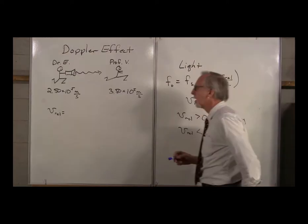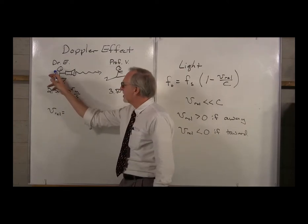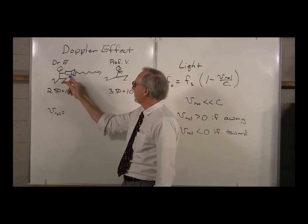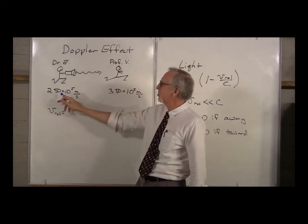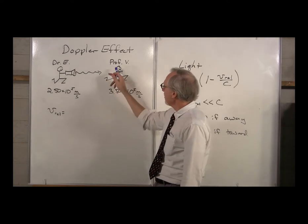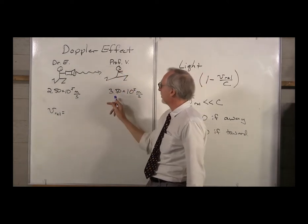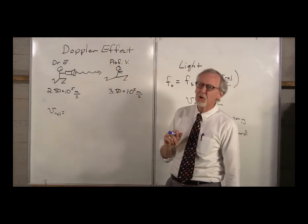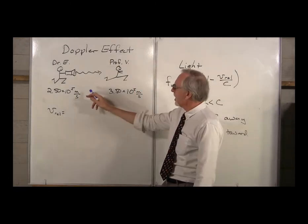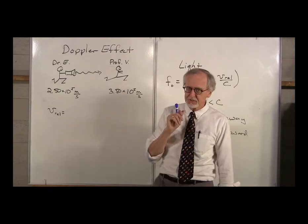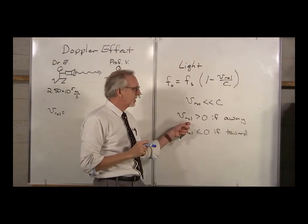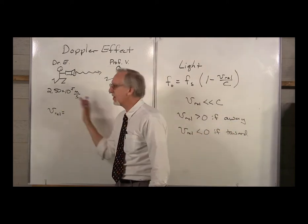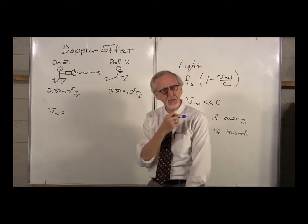Let's stick some numbers in. Imagine Dr. Evil is shining light at Professor Vial. Dr. Evil is running toward Professor Vial at 2.5 × 10⁵ m/s, and Professor Vial is running away from Dr. Evil at 3.5 × 10⁵ m/s. Notice they are both very fast runners. Let's find the relative velocity, remembering that it is positive if away and negative if toward.